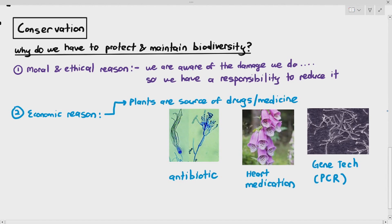The foxglove plant was the backbone of producing a chemical known as digitalis, which acts as a wonderful heart medication. We also have the bacteria Thermus aquaticus, from which we derived the enzyme Taq polymerase, used in gene technology and PCR. The point is there are things in nature that should be conserved because they benefit humans in the long run and aid in technology to improve our lives.